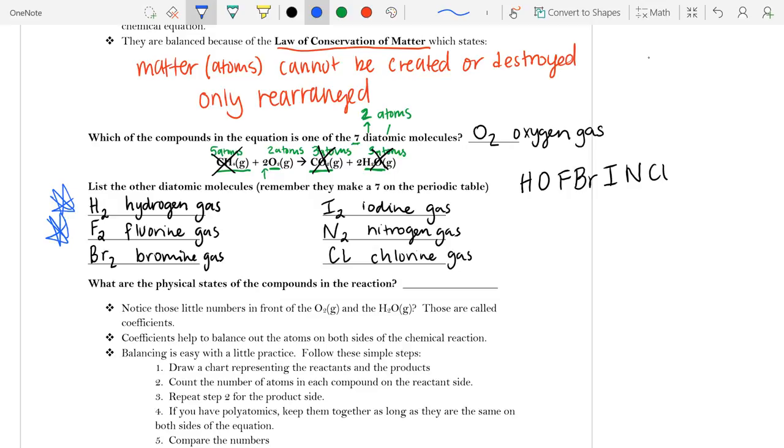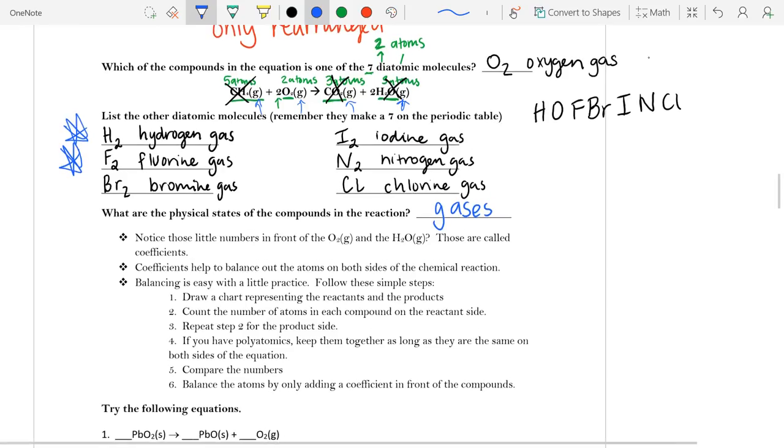Now, they ask us what the physical states of all the compounds in the reaction. We see all of these g's in parentheses here. And so we know that they were all gases.